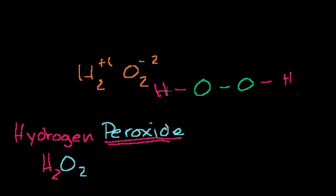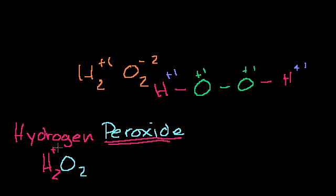In the hydrogen-oxygen bond, oxygen hogs the electron and hydrogen loses it, giving hydrogen +1. For the oxygen-oxygen bond, neither oxygen has reason to take electrons from the other, so there's no net impact. Each oxygen gains only one electron — from the hydrogen — giving each oxygen a -1 oxidation state. So: 2 times +1 (hydrogens) plus 2 times -1 (oxygens) equals 0. That's a good special case to be familiar with.